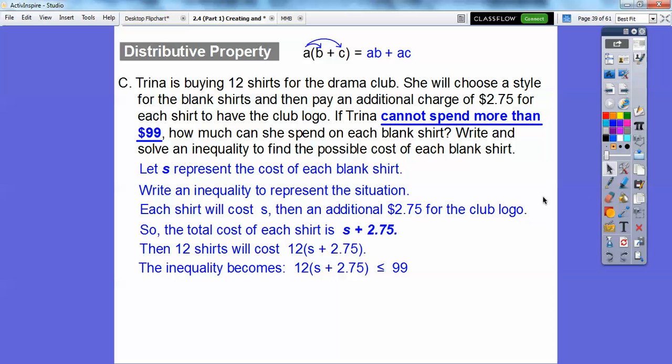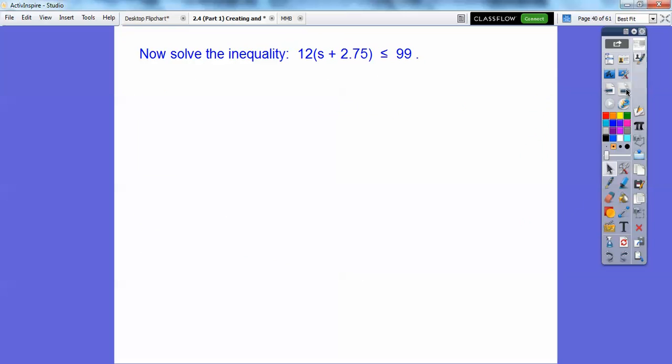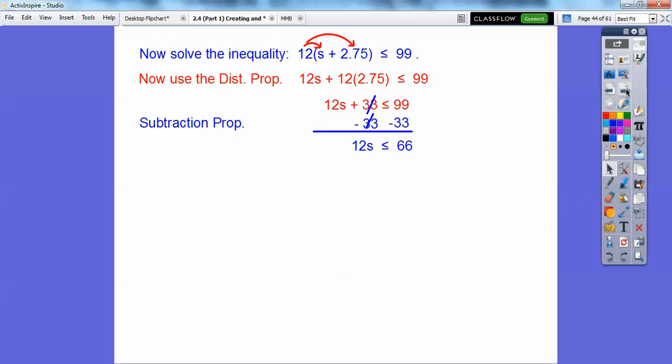So here's what we're going to solve right here. We're going to solve for S. Use the distributive property, and then 12 times 2.75 is 33. Use the subtraction property, and when we subtract, we get 66. Now we're going to use the division property, and when we divide, we get 5.5. So S is going to be less than or equal to 5.5.